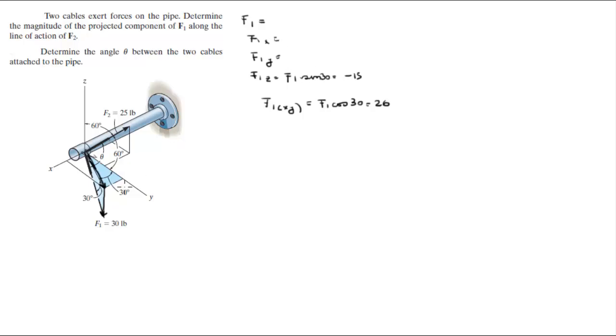Now that we have that projection, we can see that the projection times the sine of 30 gives you the X value.